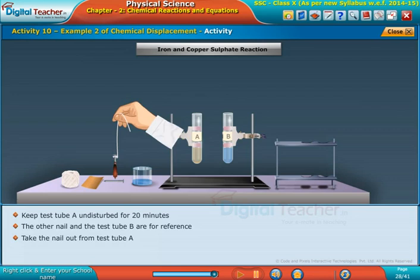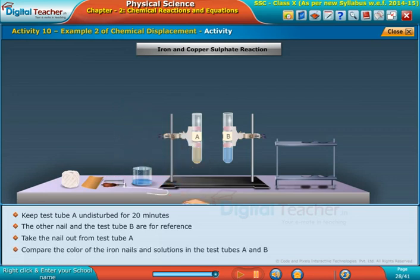Take the nail out from the test tube A. Compare the color of the iron nails and solutions in the test tubes A and B.